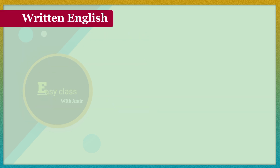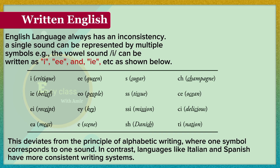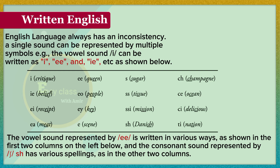Written English. The English language has an inconsistency: a single sound can be represented by multiple symbols. For example, the vowel sound 'i' can be written as I, E, and HI, etc. This deviates from the principle of alphabetic writing, where one symbol corresponds to one sound. In contrast, languages like Italian and Spanish have more consistent writing systems. The vowel sound represented by E is written in various ways, and the consonant sound SH has various spellings across different words.